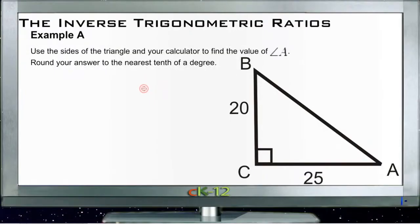All right, here are our example questions for inverse trigonometric ratios. I'm going to play around a little bit with tangent, sine, and cosine to the negative 1 function on your calculator. First thing we need to do is use the sides of the triangle and your calculator to find the measure of angle A.